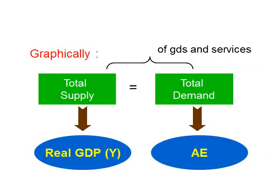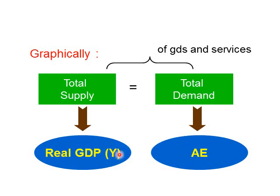Putting everything together, we have an equilibrium point whereby AE represents total demand for goods and services in the economy, and real GDP represents the total supply of goods and services in the economy. In an equilibrium situation these two should be equal — all the goods that people want should equal all the goods being produced. So our equilibrium condition is AE must equal real GDP, or Y. When you see a diagram, always look for the point where AE equals Y.